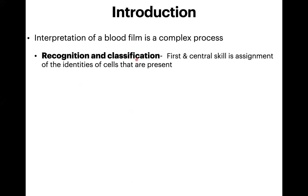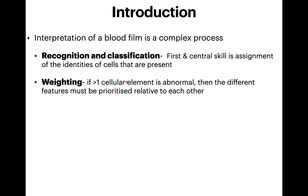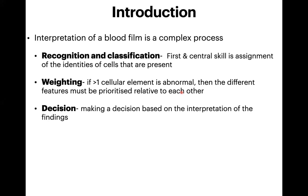The next step is weighing. If there are more than one cellular elements which are abnormal, the different features must be prioritized relative to each other. For example, if I am getting a microcytic picture but that is a small one, and there are schistocytes — those schistocytes take priority over the microcytes. So if we are seeing more than one cellular element, we have to prioritize which one is more important, and based upon that, these findings will make a decision.